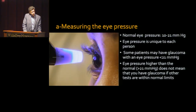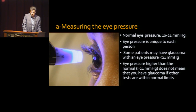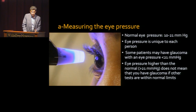The normal eye pressure is between 10 to 21, and eye pressure is unique to each person. Some patients may have glaucoma while their eye pressure is below 21. On the other hand, some patients may have a pressure of more than 21 and show no sign of glaucoma. So eye pressure is one factor — we need to look at other factors too.